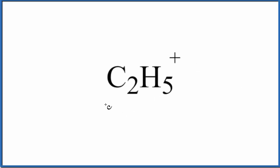Let's draw the Lewis structure for C2H5+. This is the ethyl radical, so it's a radical because it has this charge up here. Let's first count the valence electrons, then draw the Lewis structure.